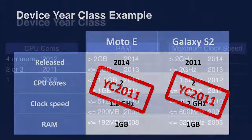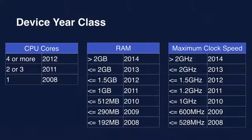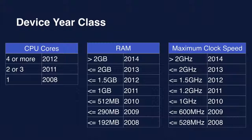There are many different characteristics we could have looked at, and we looked at all of them. We found that these three — CPU cores, clock speed, and RAM — are the ones that make the most difference in terms of app performance and how users are able to interface with the app. On some devices you won't get an exact match, so we go for two out of three. If two out of three match the year class, we call those devices from that year class. That's been a really useful metric for us.